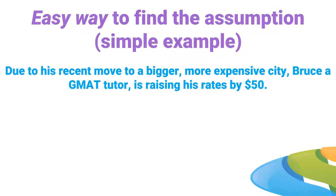Let's take a look at the simple example. Due to his recent move to a bigger, more expensive city, Bruce, a GMAT tutor, is raising his rates by $50. The first thing we do is pick out the conclusion — what will happen or what's the goal? The goal is for Bruce to raise his rates by $50. That's the conclusion.